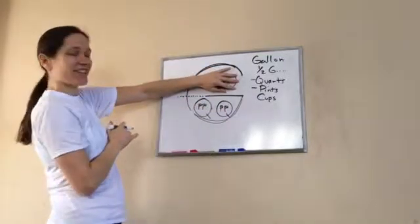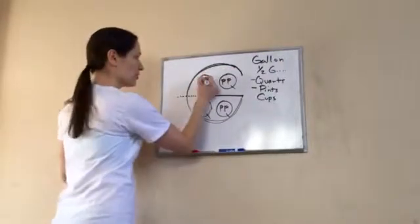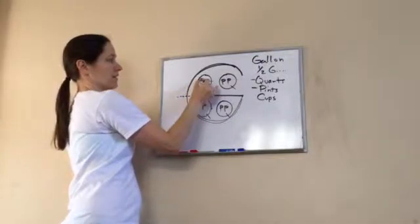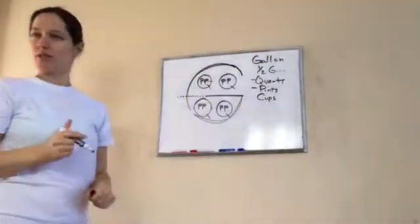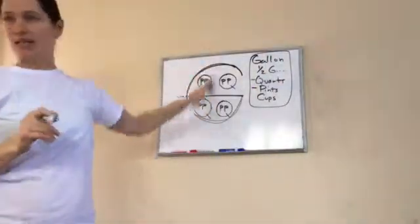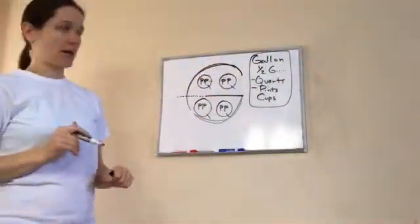How many cups are in a half gallon? Eight. Very good. Two, four, six, eight. How many cups are in a full gallon? 16. Very good. See how that works? Pretty cool. So you can come up with any of these measurements just by drawing this little gallon house, gallon man.